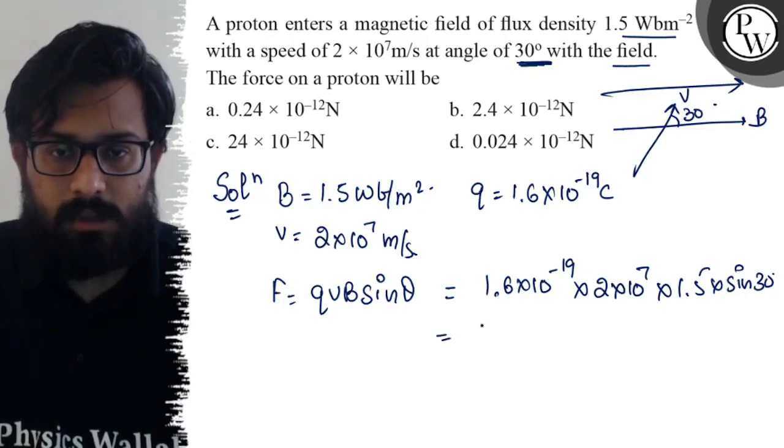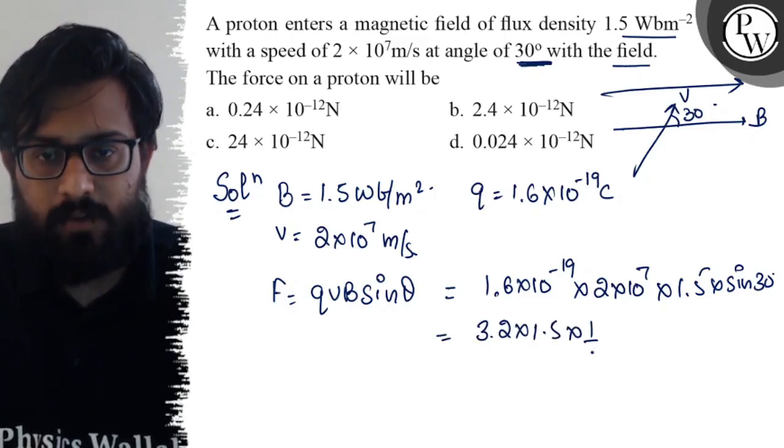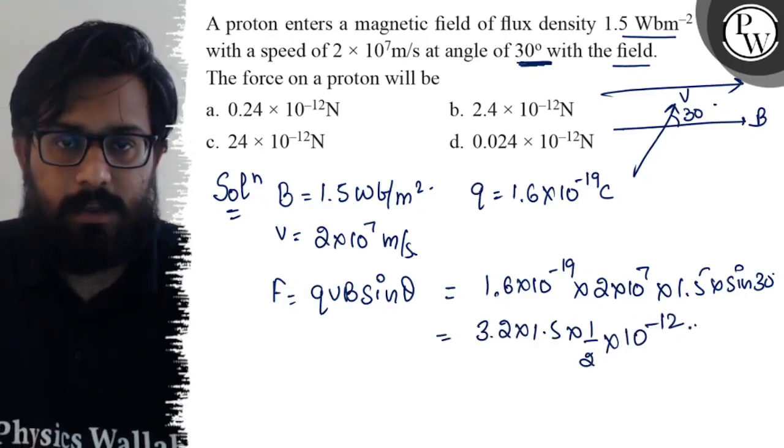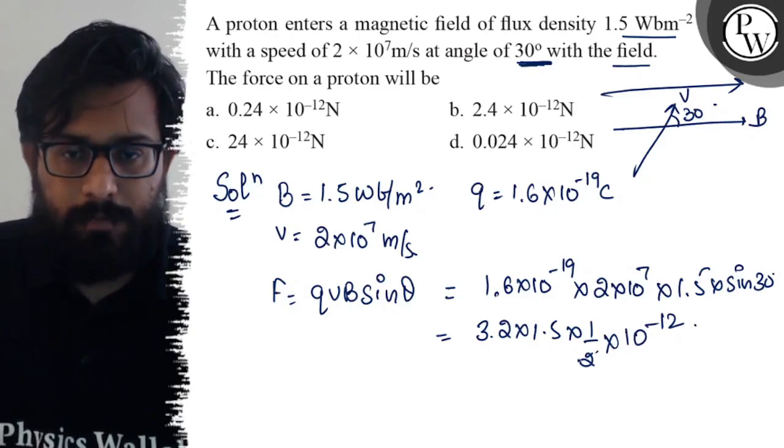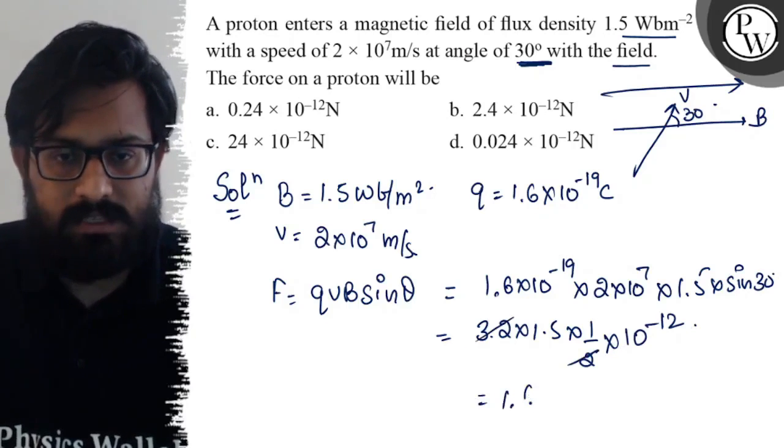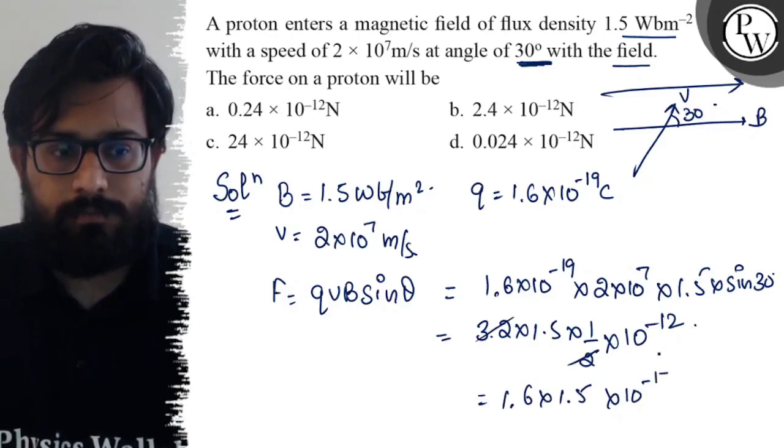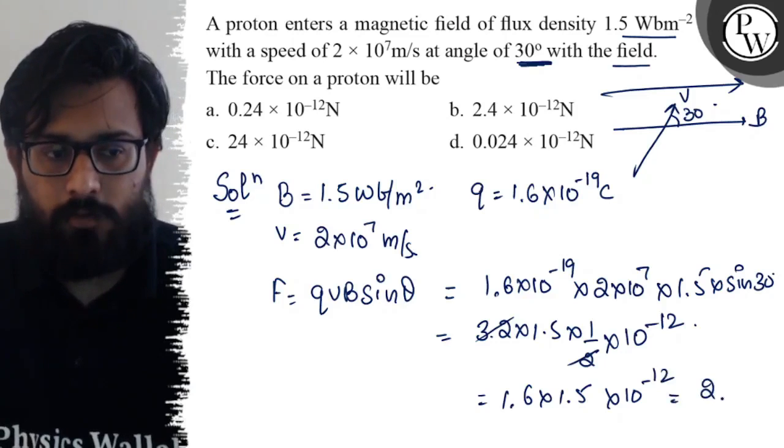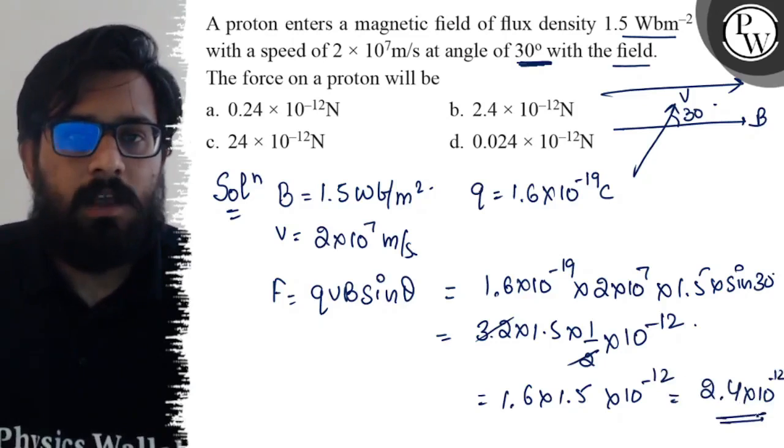Once you solve this calculation, you get the simplified value of 2.4 × 10^-12, which is your answer.